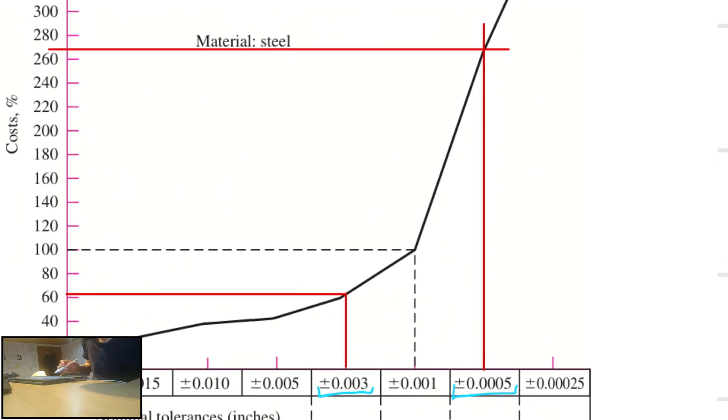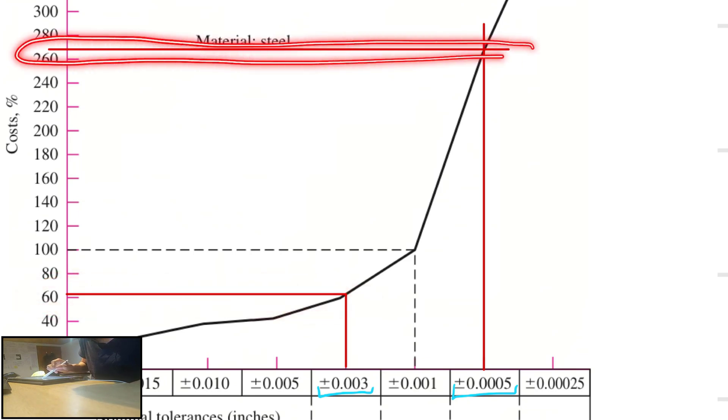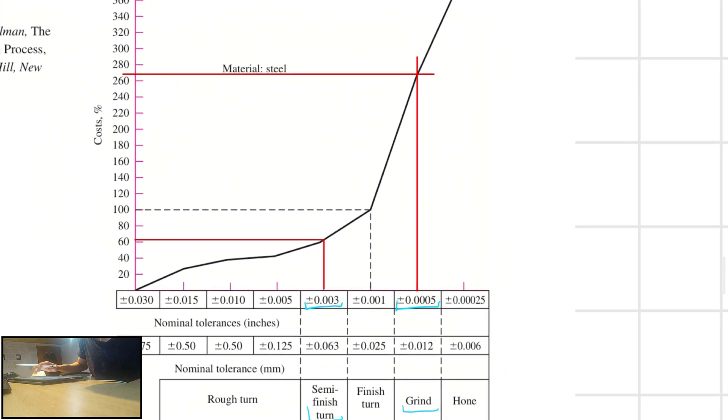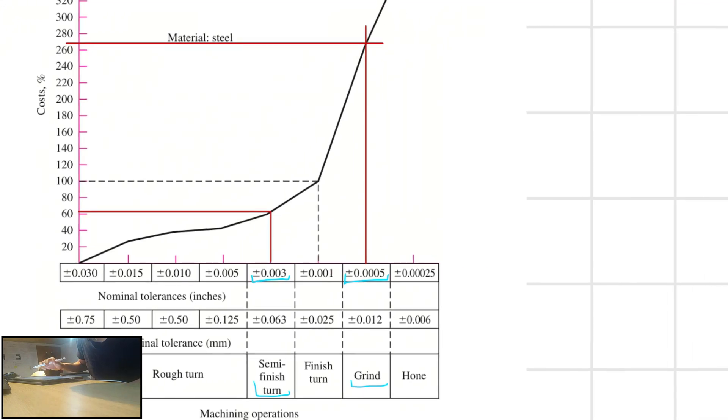We could approximate this value to 60 and this value to 270, right? Because it is closer to the middle between these two points. So the cost of a tolerance of 0.0005 is 270 percent, and turning it to 0.003 is 60 percent.